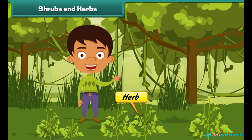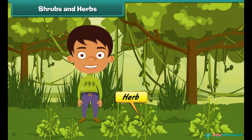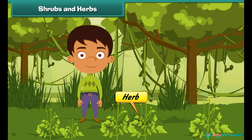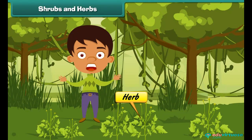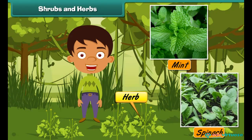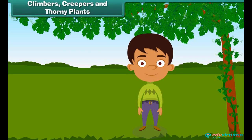Herbs are small green plants. They have a soft stem and a short life of one or two years. Their stem, leaves, seeds, or flowers are used in food preparations for flavoring. They are also used as medicines. Mint and spinach are examples of herbs.